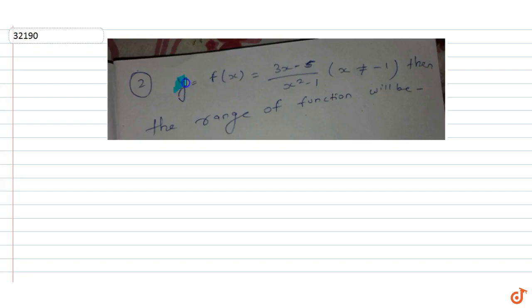The question given is: y = f(x) = (3x - 5)/(x² - 1), where x does not belong to ±1. Find the range of the function. So we have given f(x) = y = (3x - 5)/(x² - 1), and x does not belong to ±1.